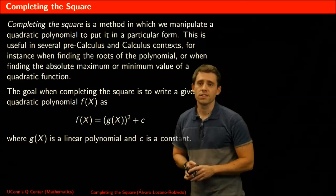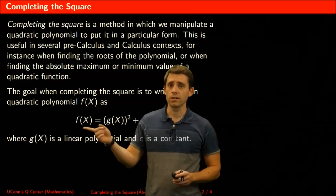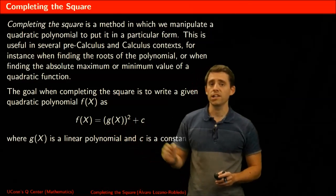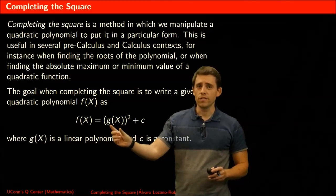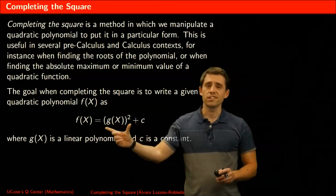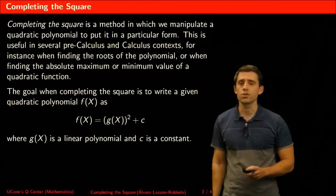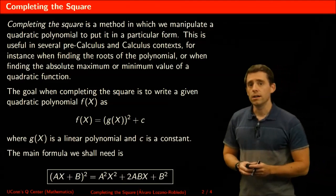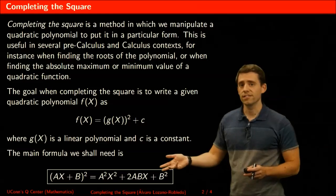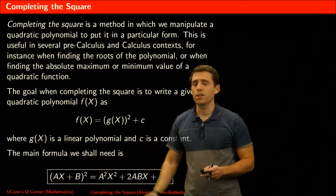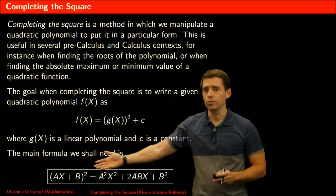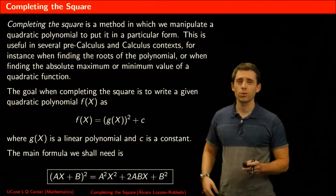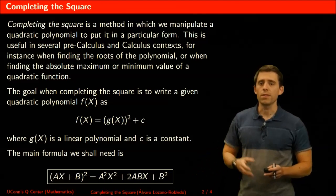The method does the following. If you start with a function given by a quadratic polynomial, we want to write it as a square plus a constant — so g of x will be a linear polynomial such that its square plus a constant equals the function we started from. The main formula we need is simply the expansion of a square of a linear polynomial, and that's what we'll use to guide us through the method.